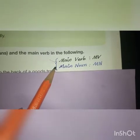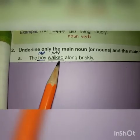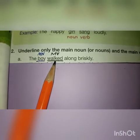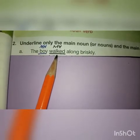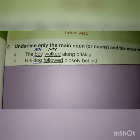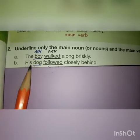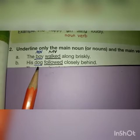'The boy walked along briskly.' Here our main noun is 'boy' while the verb is 'walked.' 'His dog followed closely behind.' Again, the main noun is 'dog,' underlined with the blue pen.